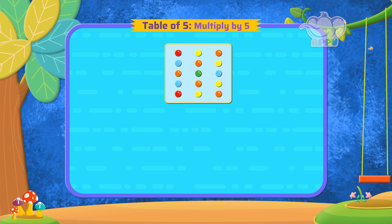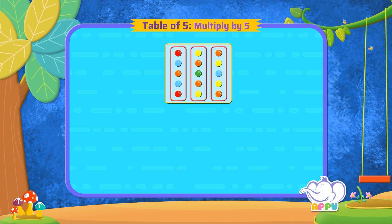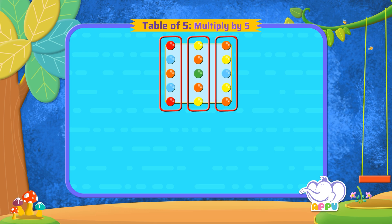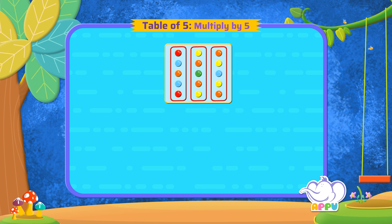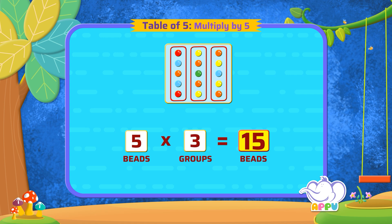But how do we use multiplication tables to do this? There are five beads in three groups, so we write 5 times 3 equals 15 beads. Right on!